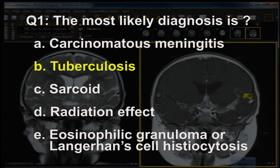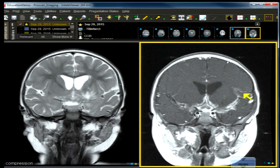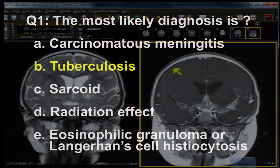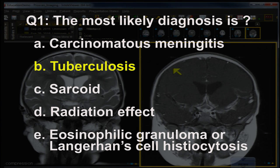The answer to question one is B — tuberculosis. Why not carcinomatous meningitis? The history doesn't support it — a high fever — but also, why would carcinomatous meningitis settle only at the brain base without affecting the convexity? This is something heavy, like an exudate or heavy particulates, or perhaps a fungal infection with large particle size, or tuberculosis, which is a relatively heavy exudate that settles at the brain base — so-called basilar meningitis — and this is characteristic of TB.